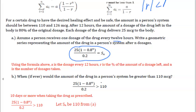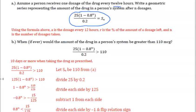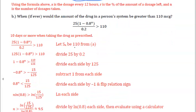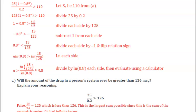Part b: when if ever would the amount of the drug in a person's system be greater than 110 micrograms? So we're going to set this greater than 110. So we're going to solve for n. Divide 25 by 0.2 so get this number, divide each side by 125, subtract 1 from each side, divide by negative 1 to get rid of this negative. You flip this relation symbol now it's going to be less than. You're going to take the natural log of each side and then divide by the natural log of 0.8 on each side and then evaluate with a calculator. They'll never expect you to evaluate those without a calculator. If you're not allowed to have a calculator for these kinds of problems you'll just leave it in the exact form.